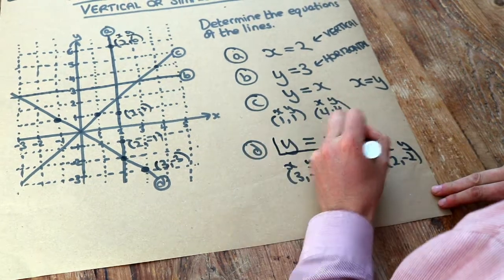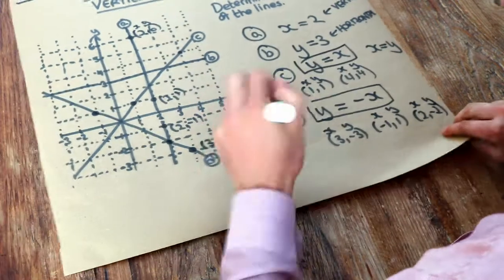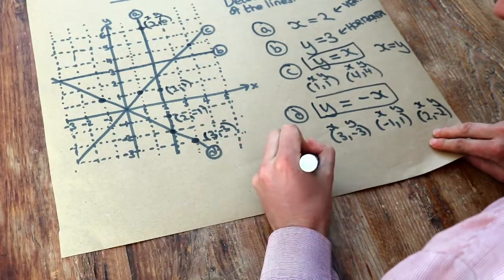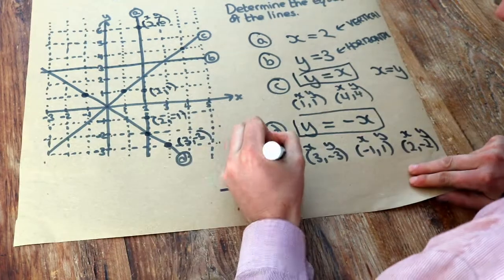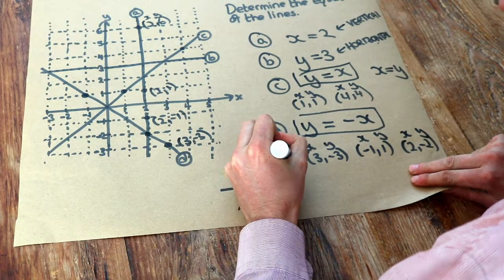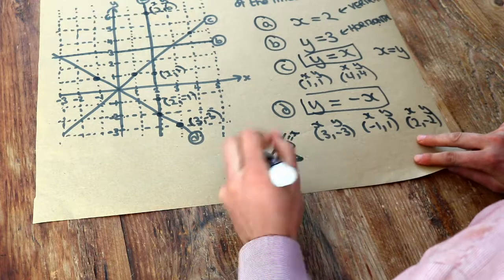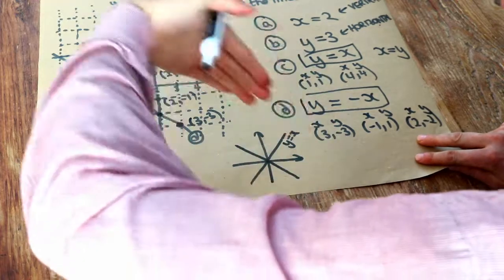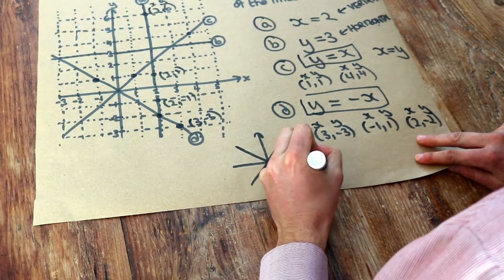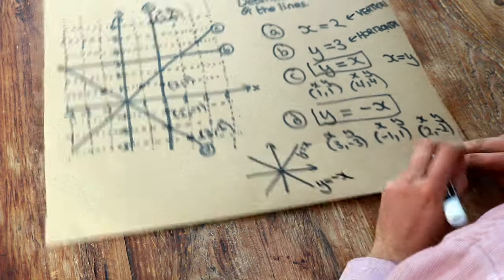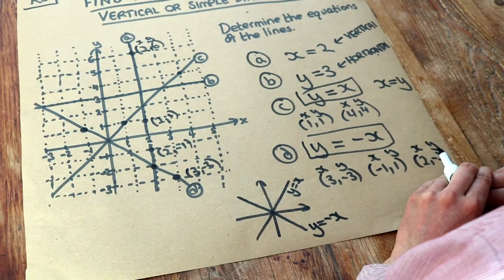To summarise the diagonal lines: if you have a diagonal line going up at 45 degrees, it has the equation y equals x. And if you have a diagonal line going down at 45 degrees, that's going to be y equals negative x. Thank you.